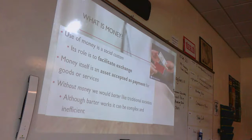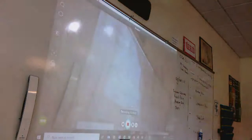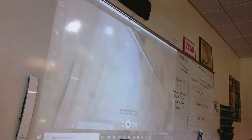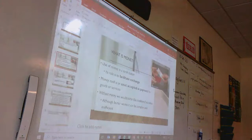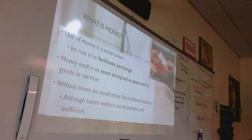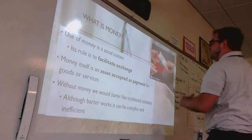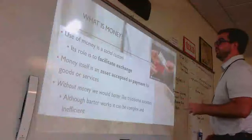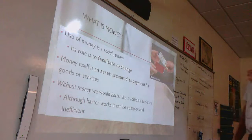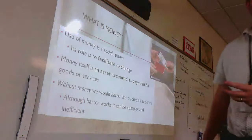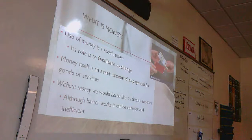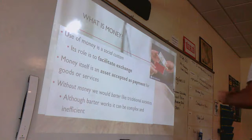Today we are shifting gears from fiscal policy to monetary policy. With fiscal policy we look at how the federal government uses taxes and government spending to influence our economy. With monetary policy we're looking at the Federal Reserve and how it uses money to influence our economy. Today we'll look at money in particular and the structure of the Federal Reserve, then we'll start talking about the tools they use to influence our economy.